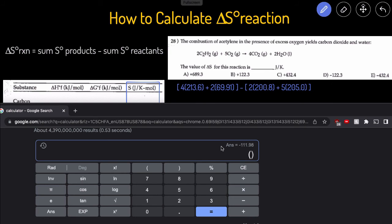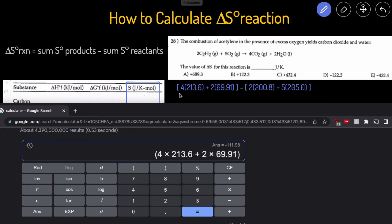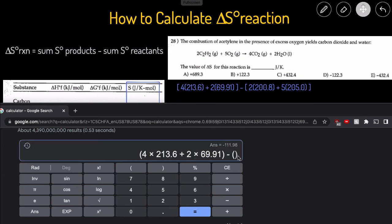So we'll start with the parentheses for the products. 4 times 213.6, plus 2 times 69.91. And then we're going to minus another parentheses for the sum of the reactants. 2 times 200.8, plus 5 times 205.0, close parentheses.